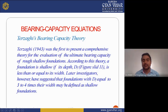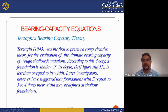The bearing capacity equation is given by the Terzaghi bearing capacity theory. Terzaghi presented this theory in 1943 and was the first to present a comprehensive theory of the ultimate bearing capacity of a rough shallow foundation. According to this theory, a foundation is shallow if depth Df is less than or equal to its width. Later investigators suggested that foundations with Df equal to three to four times their width may also be defined as shallow foundations.